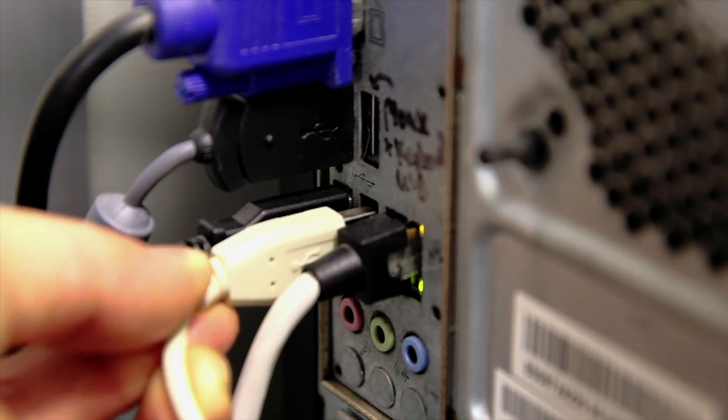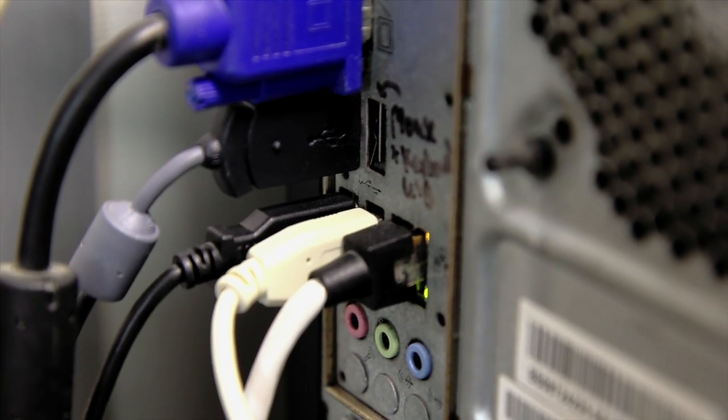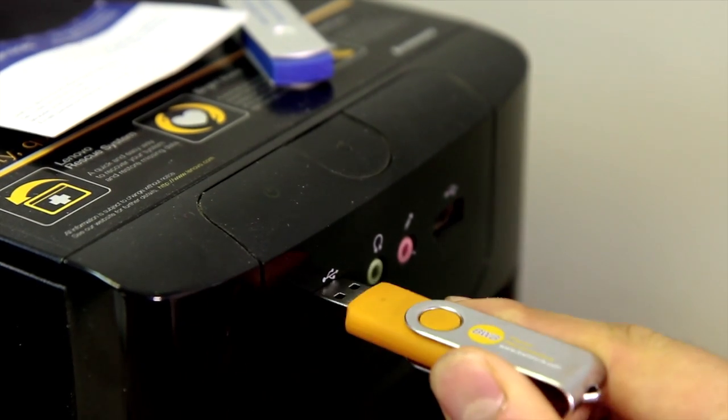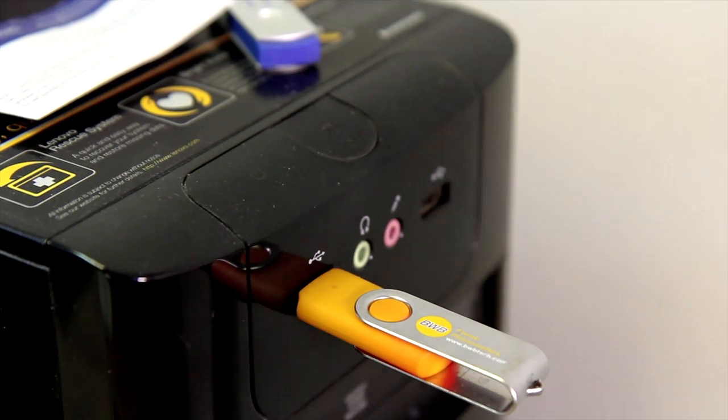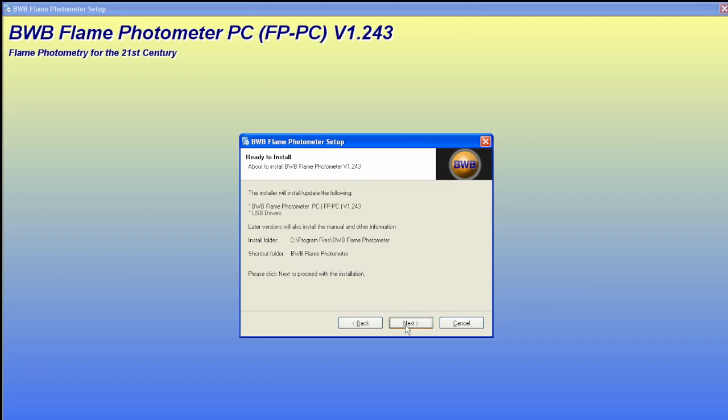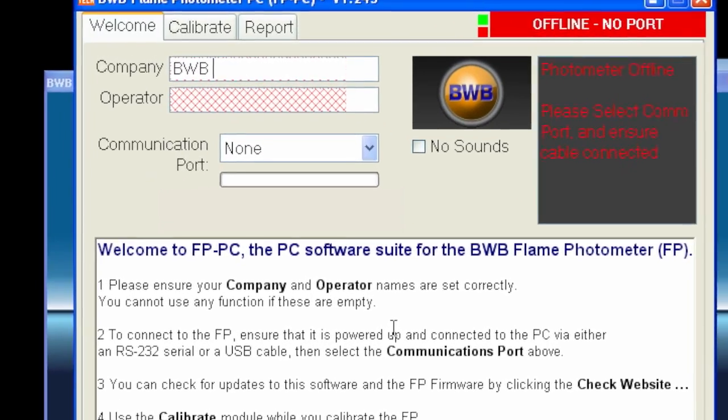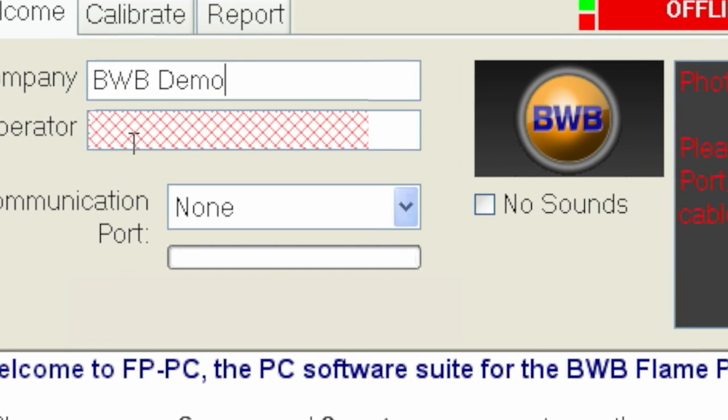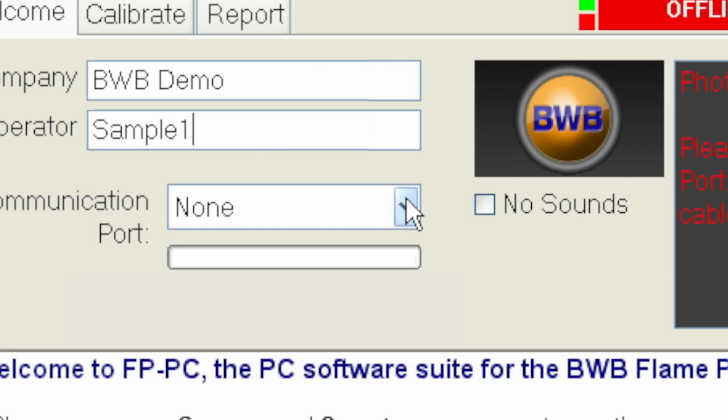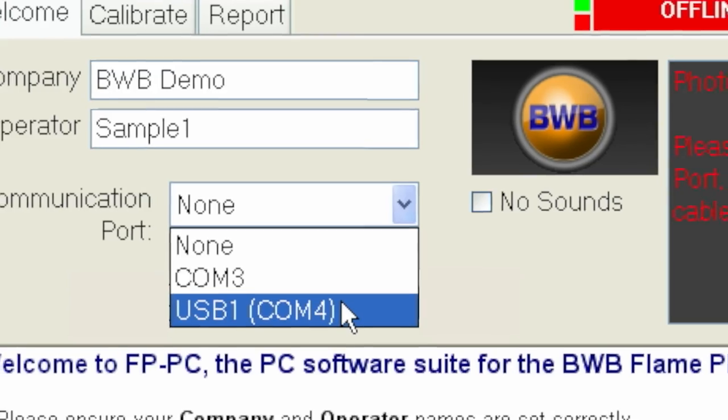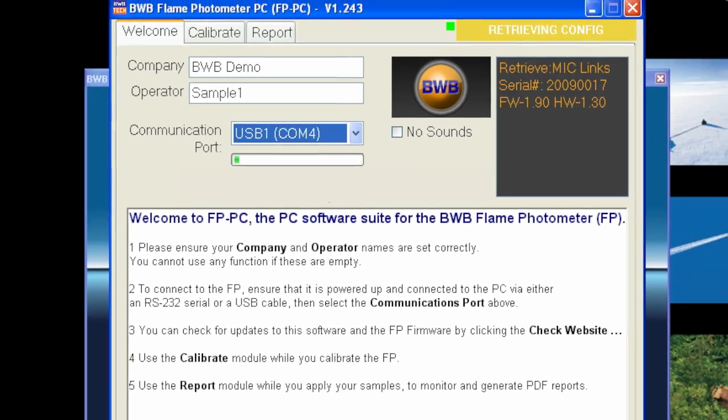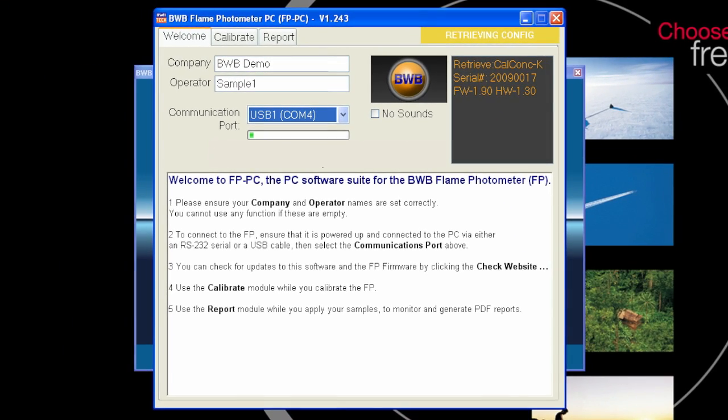Connect the BWB bio to your computer with a USB cable and install the FPPC software provided on the USB flash drive. Follow the guided process to install the app. Open the application to bring up the welcome tab. Enter your company and operator details. This allows you to print reports and files. The PC software will not work without an input in these fields. Set the COM port to USB so the BWB bio can communicate with your computer.